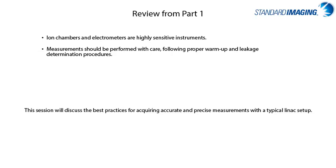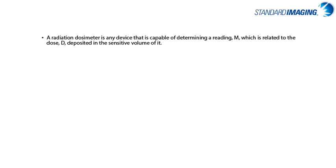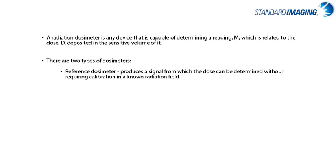This session will focus on the best practices for acquiring accurate and precise measurements with a basic LINAC setup. In general terms, a radiation dosimeter is any device that is capable of determining a reading which is related to the dose deposited to the sensitive volume of it. There are two types of dosimeters: a reference dosimeter, which can directly realize your quantity of interest without requiring calibration, and a relative dosimeter, which is what we are most familiar with in the clinical setting and does require calibration in a known radiation field.